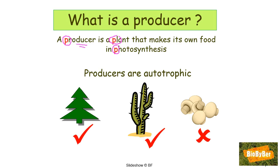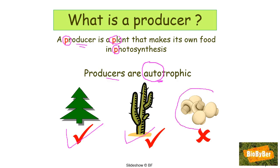Producers are autotrophic — they make their own food. So our Christmas tree here is an autotroph, and so too is the cactus, because both of these organisms are green and can carry out photosynthesis. However, the mushrooms are not autotrophs — they have no chlorophyll, no green color, they cannot do photosynthesis, and they cannot make their own food.